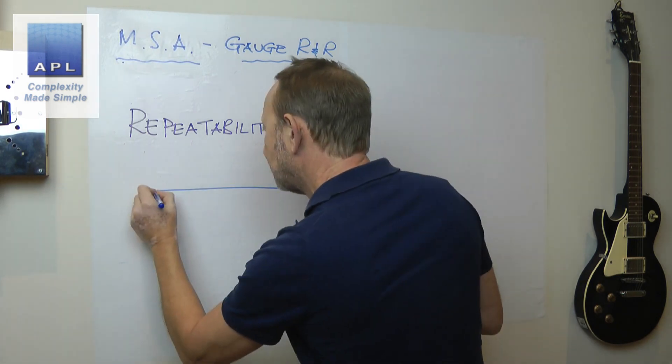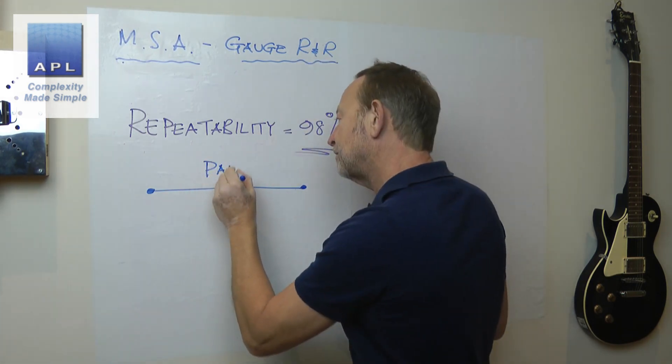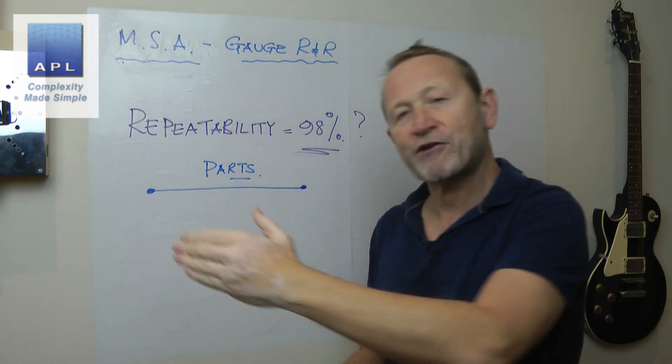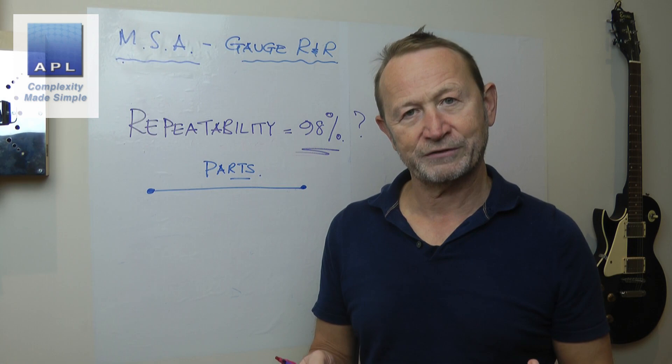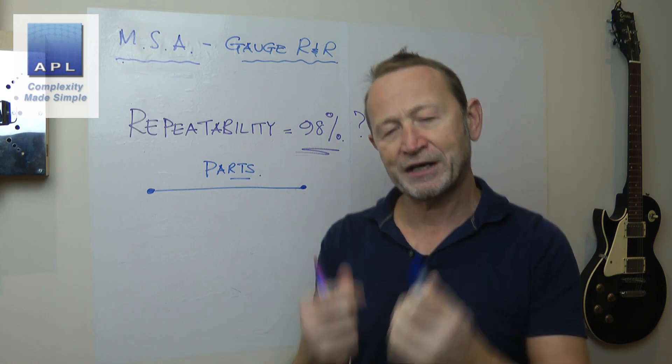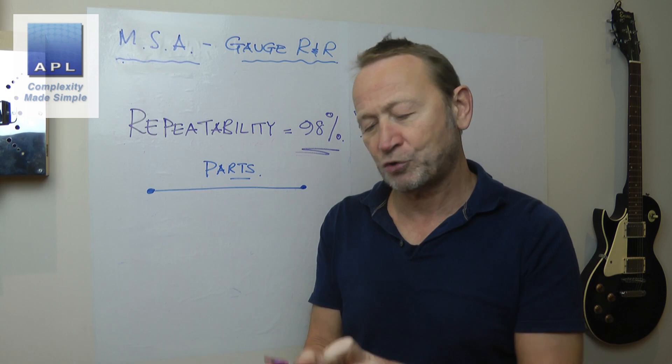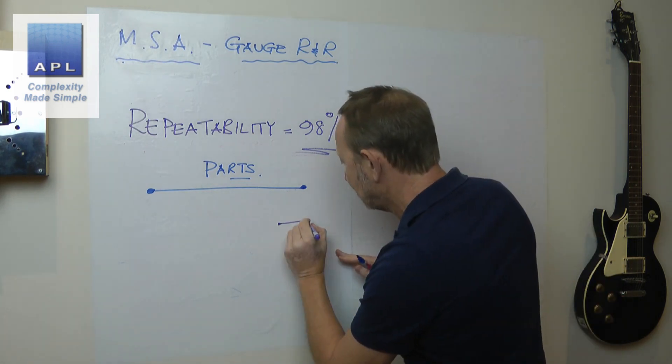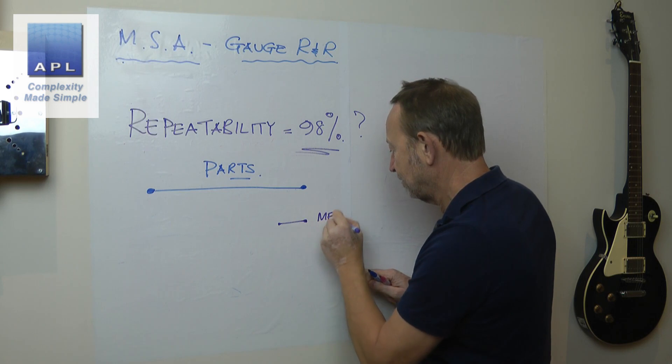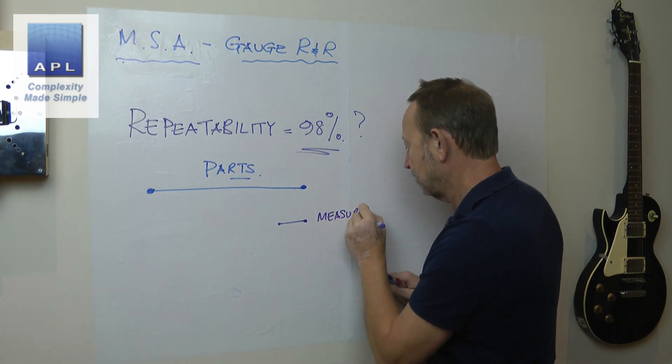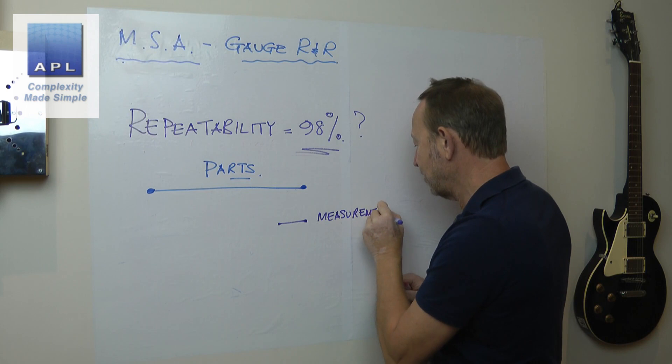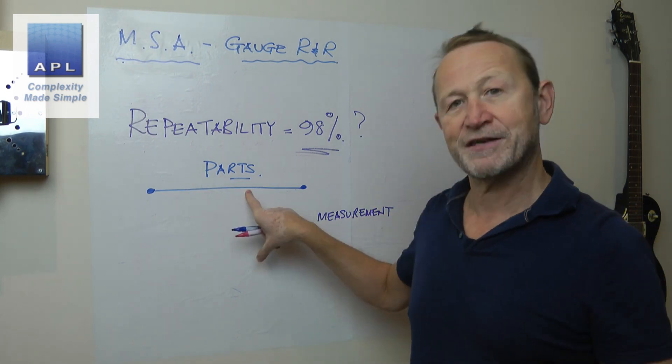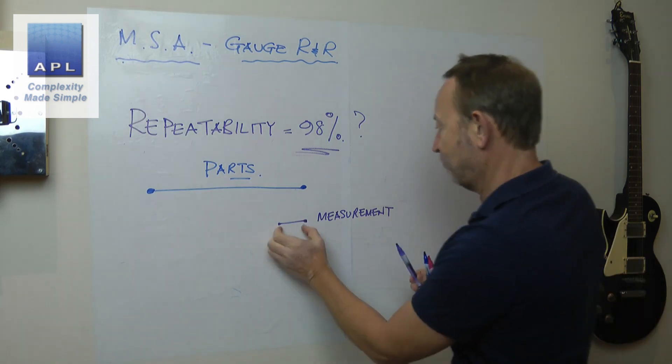Now look, what this number is, the error from your measurement system is a ratio. And that's important to understand. So what is the ratio? Well, you've got variability that is coming from the parts, the natural variability of the process. And then what you do in an MSA, you set the test up in such a way that it evaluates the variability coming from the measurement system.